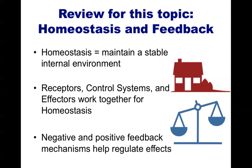To review, homeostasis is your body's ability to maintain stable internal conditions despite a changing outside environment. Think of the home with the thermostat — your body acts similarly, though it has different receptors, control systems, and effectors. In the examples discussed, the skin detected temperature changes and the brain decided to either activate sweat glands to cool off or activate shivering movements in the muscles to warm up. Your body usually maintains homeostasis through negative feedback, which helps conserve energy. Positive feedback is sometimes used for a fast and intense response, but it is not as common.